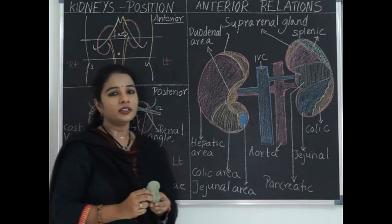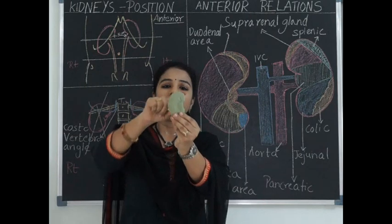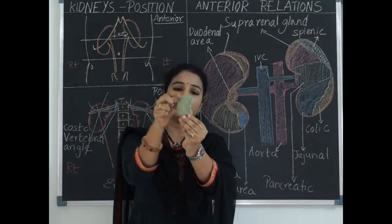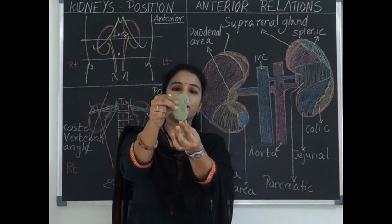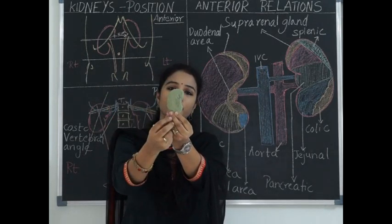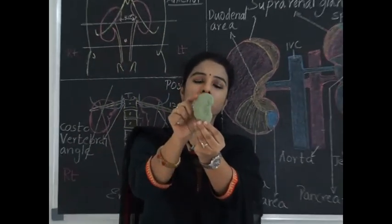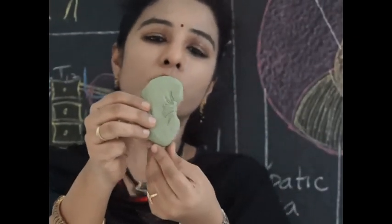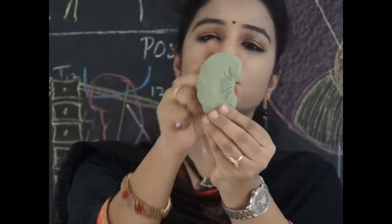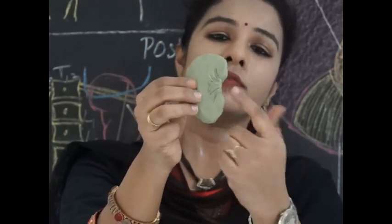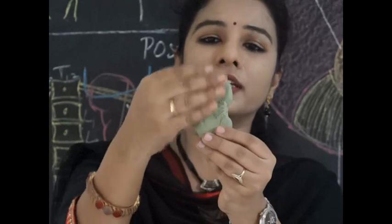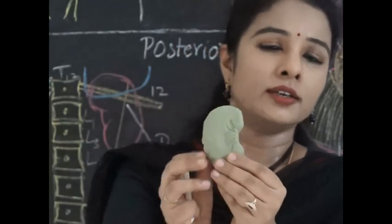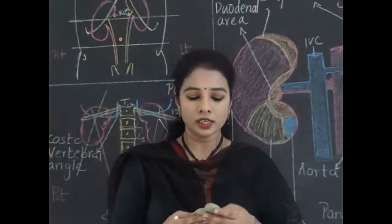Coming to the external features of the kidney: it has a superior pole and an inferior pole. The superior pole is broader than the inferior pole because the suprarenal gland lodges over it. The inferior pole is pointed. The kidney has a convex lateral border and a concave medial border with a notch called the hilum. The anterior surface of the kidney is convex and the posterior surface is flat.